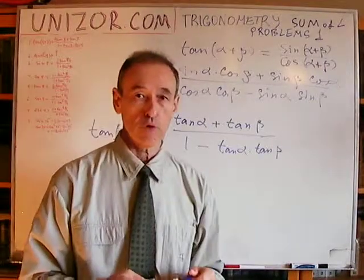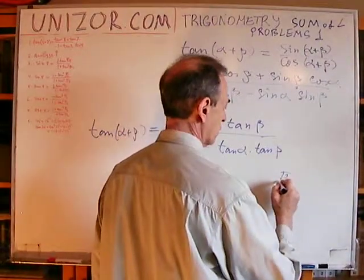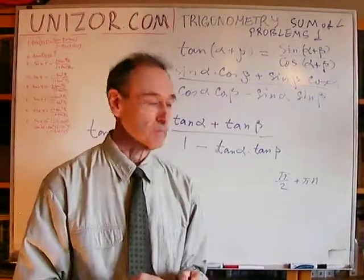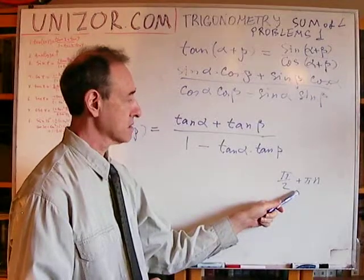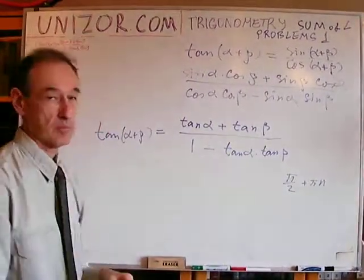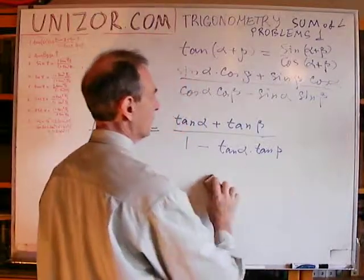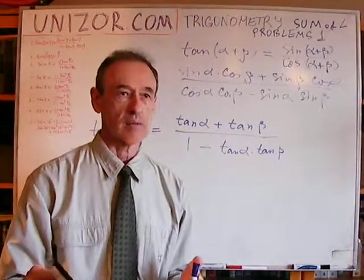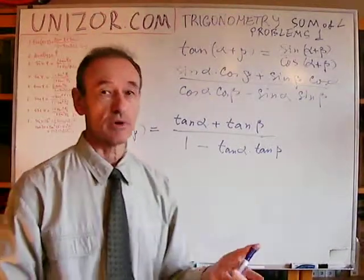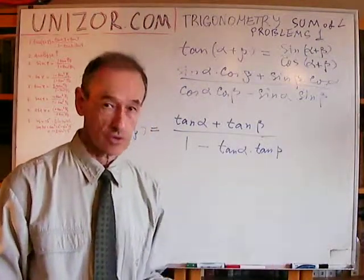The tangent is not defined wherever cosine equals zero, which is at π/2 + πn, where n is any integer. So if angle alpha is not equal to π/2 + πn, and beta not equal to it, and alpha plus beta not equal to it, then the formula makes sense and every member is defined. That's very important to remember: formulas for sine and cosine are true for any two angles, but formulas for tangent might not hold for all angles, because tangent may not be defined.